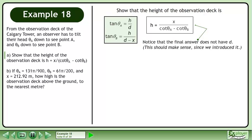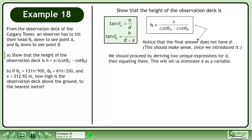Notice that the final answer does not have d. This should make sense since we introduced it. We should proceed by deriving two unique expressions for d, then equating them. This will let us eliminate d as a variable.